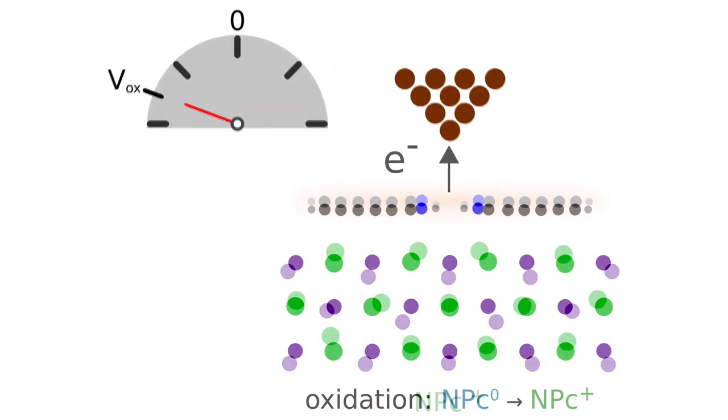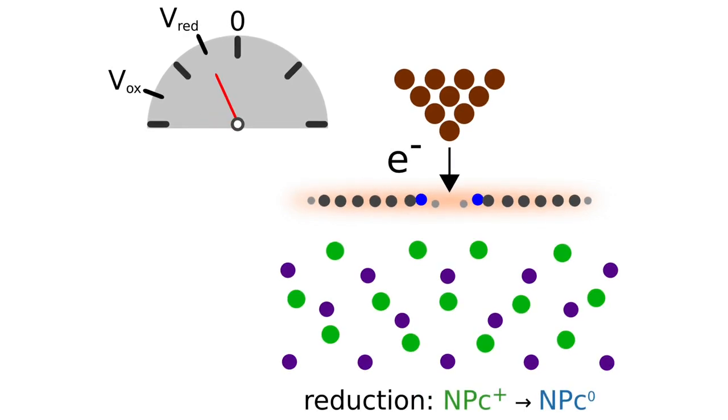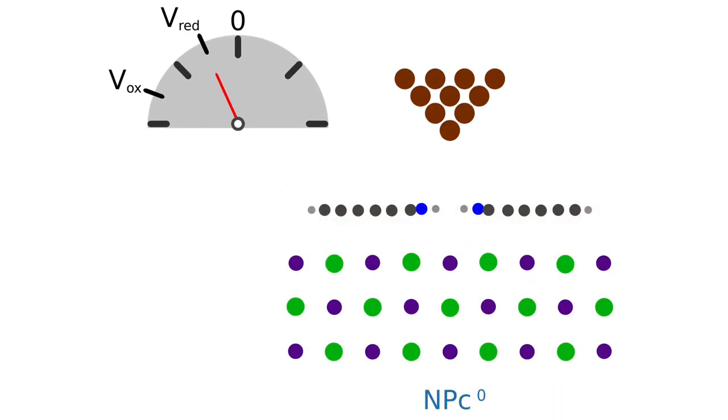In the experiment, the team observed that a molecule is charged and discharged at different applied voltages. The difference of these voltages is linked to the reorganization energy. It is the energy gained because of the change in the positions of the atoms upon charging.